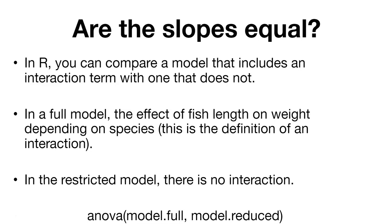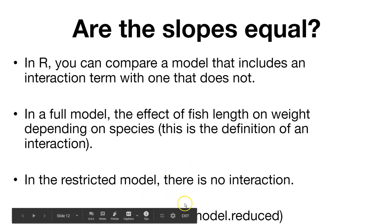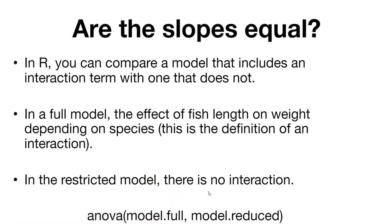And then we might have a restricted model or a reduced model where there is no interaction. And the way we might write this in R is we'll use the ANOVA function and we'll say model.full, model.reduced, and then it will run that test to compare whether or not the slopes are equal. So this idea of running a full and reduced model will tell you whether or not the slopes are equal to run the analysis of covariance.